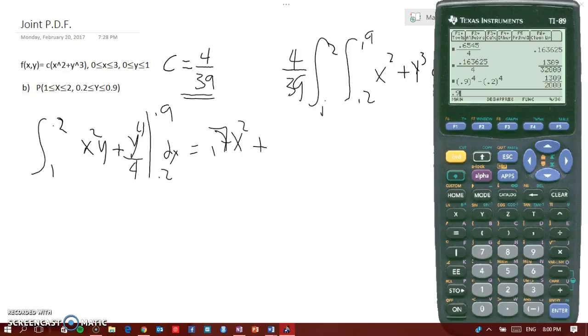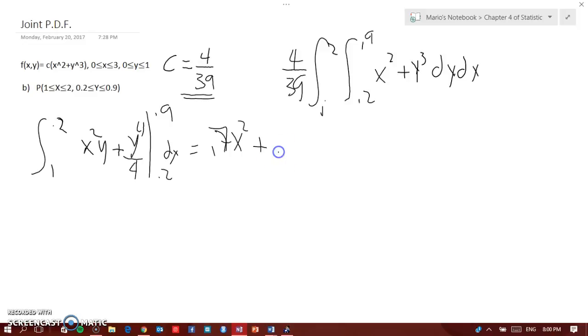0.9 to the power of 4 minus 0.2 to the power of 4 equals 0.6454 divided by 4, so it's equal to 0.164. And that's the integral from 1 to 2 dx, so now we are going to integrate in respect to x.